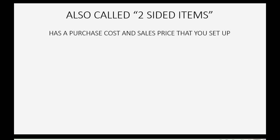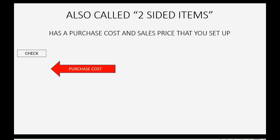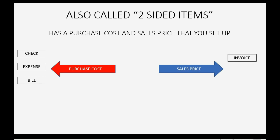Non-inventory parts are also called two-sided items, and they're called two-sided items because they have a purchase cost and a sales price that you have to set up when you set up the item. The purchase cost is what will automatically appear when you write a check to buy the items, record an expense transaction, or enter a vendor's bill. The sales price will automatically show up on the invoice or the sales receipt when you sell the item.